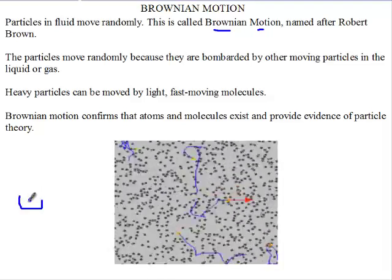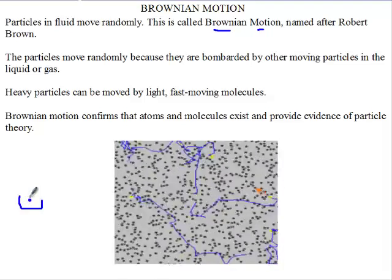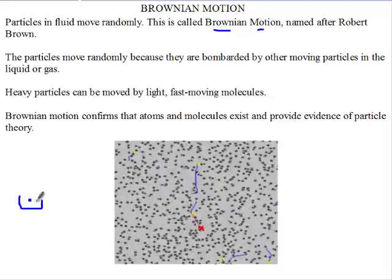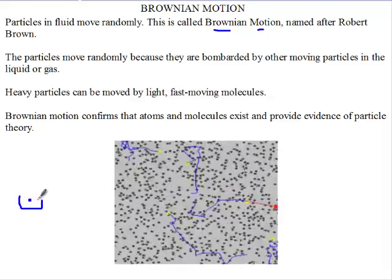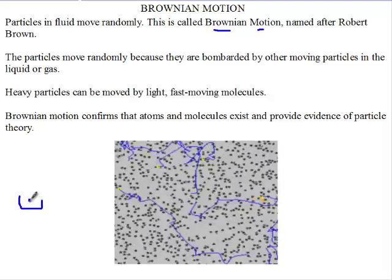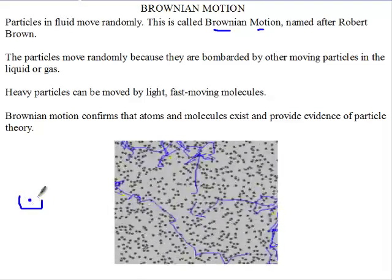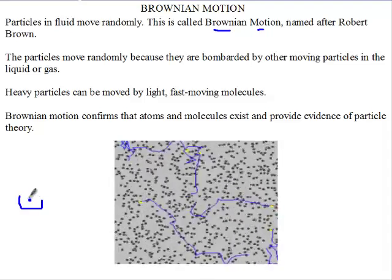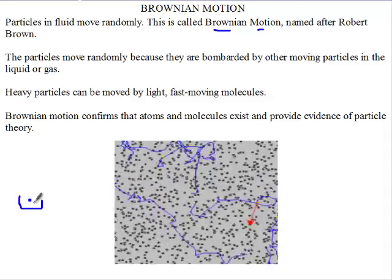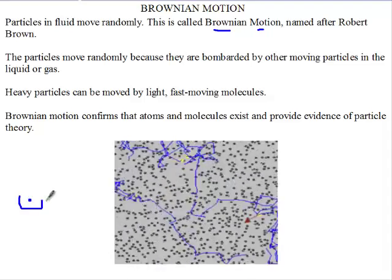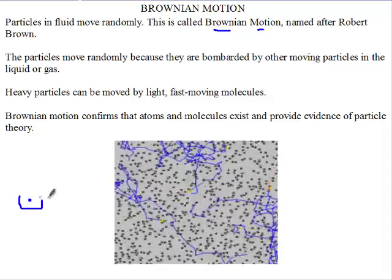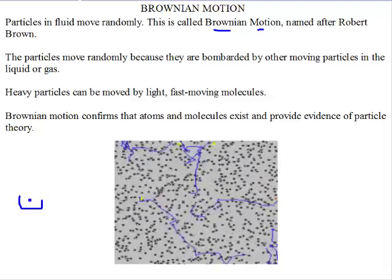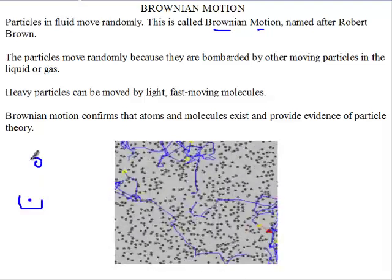Einstein explained this better. He said that the particles were being carried around by the water molecules — the pollen was being carried around by the water molecules, which were themselves moving randomly. Their random movement is due to collisions between the particles.